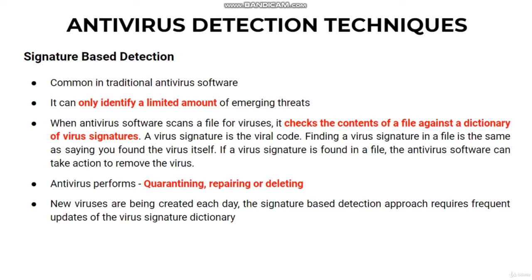The first one is signature-based detection. It is the most common method to identify viruses and other malwares. Antivirus software compares the contents of a file to a dictionary of virus signatures. Because viruses can embed themselves in existing files, the entire file is searched, not just as a whole but also in pieces. Signature detection is simply comparing file contents, and if you find that virus in the dictionary as well as in the file, then you declare that a virus is found.